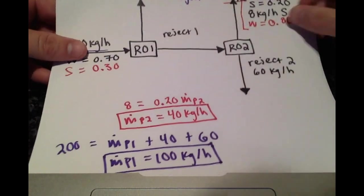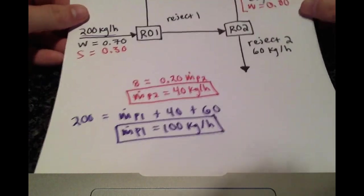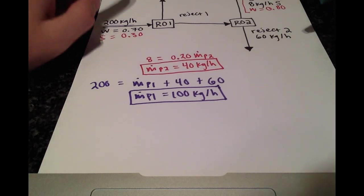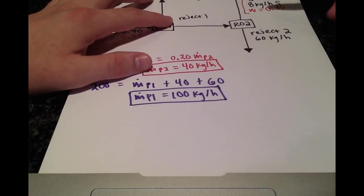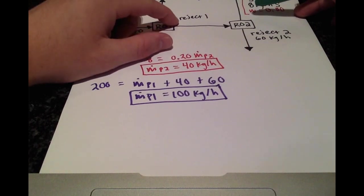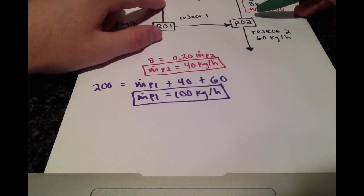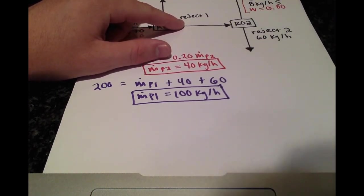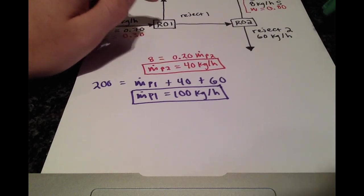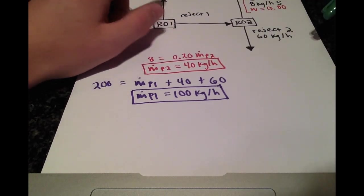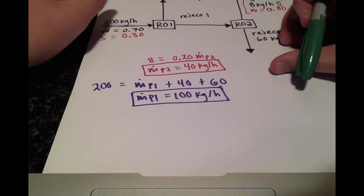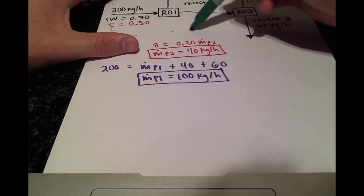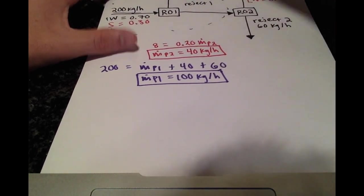We also know that MP2 is 40 kilograms per hour. I'll occasionally fill in information so we can see what we have and what's missing. It appears as though we filled in almost all the information we have, but we're forgetting one thing. We were told a relationship between reject stream 1 and the permeate stream 1. The RO1 reject stream has salt content that is 11 times greater than that of permeate stream 1. So how do we write this? Let's start out by doing a salt balance on RO1.